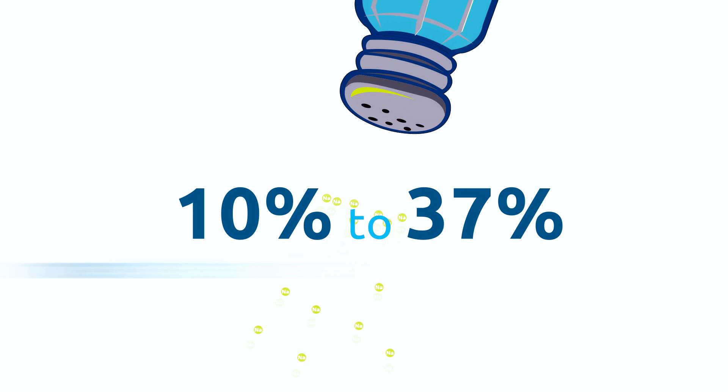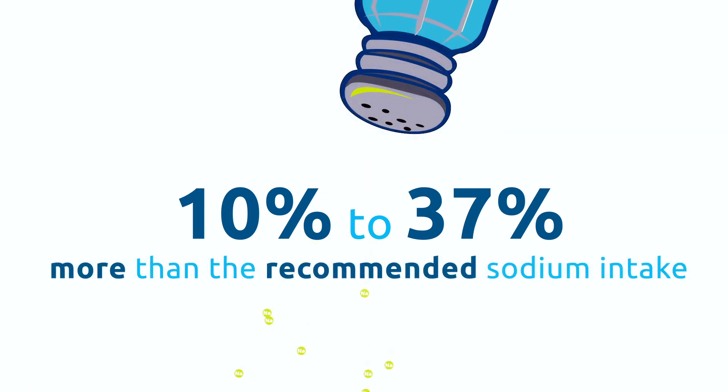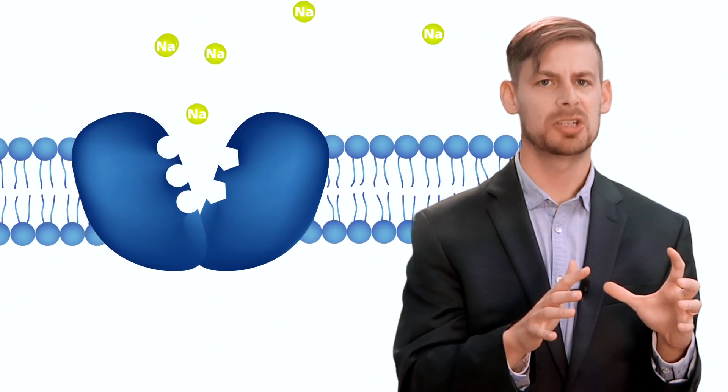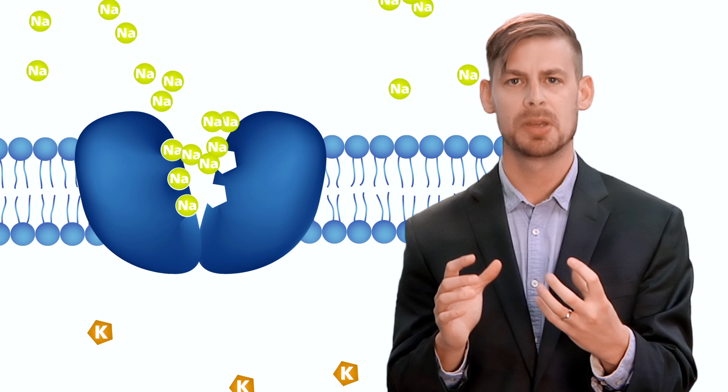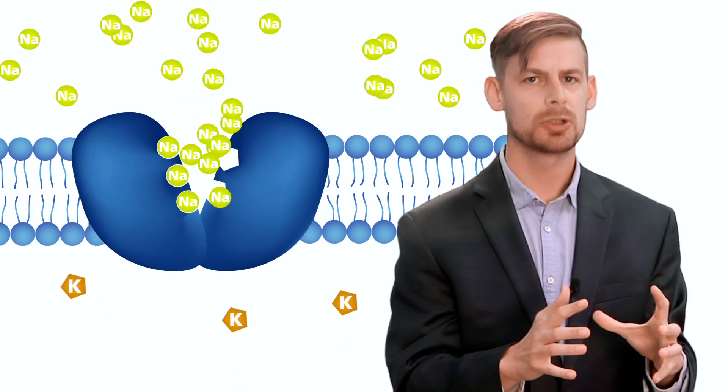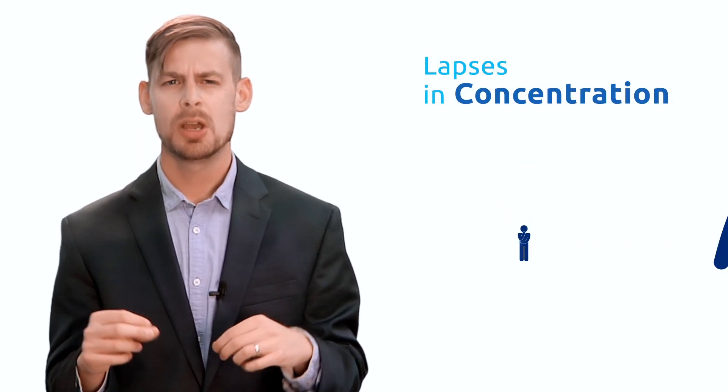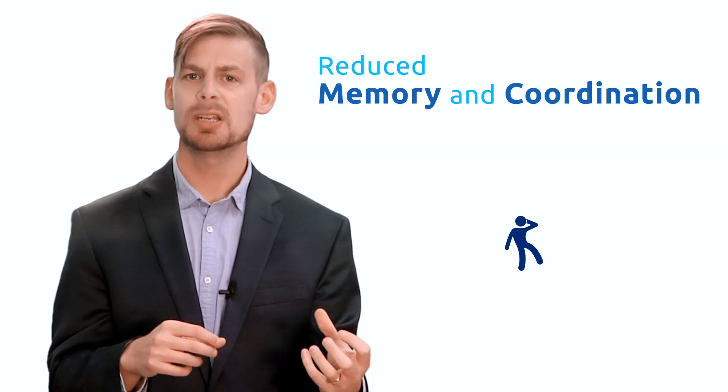The average American consumes 10 to 37 percent more sodium on a daily basis while only consuming half of the recommended potassium intake. This over-consumption of sodium and under-consumption of potassium leads to suboptimal functioning of the sodium-potassium pump, resulting in fewer neurotransmitters being released in the brain. This can ultimately lead to lapses in concentration, reduced memory and coordination, and alterations to mood.